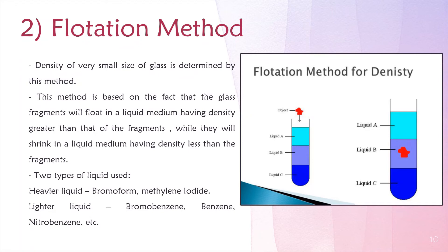The flotation method determines the density of very small glass fragments. It is based on the fact that glass fragments will float in a liquid medium having density greater than that of the fragments, while they will sink in a liquid medium having density less than the fragments. Two types of liquids are used: heavier liquids, which include bromoform or methylene iodide, and lighter liquids, which include bromobenzene, benzene, and nitrobenzene.